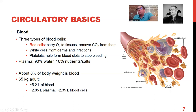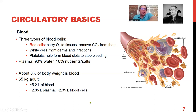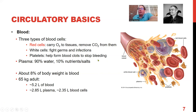Red cells being the oxygen carriers are of interest when talking about aerobic or anaerobic processes. Plasma is mostly water, and about 8% of adult body weight is blood. Interestingly, we have about 5.2 liters of blood, and blood donation commonly occurs in units of liters.